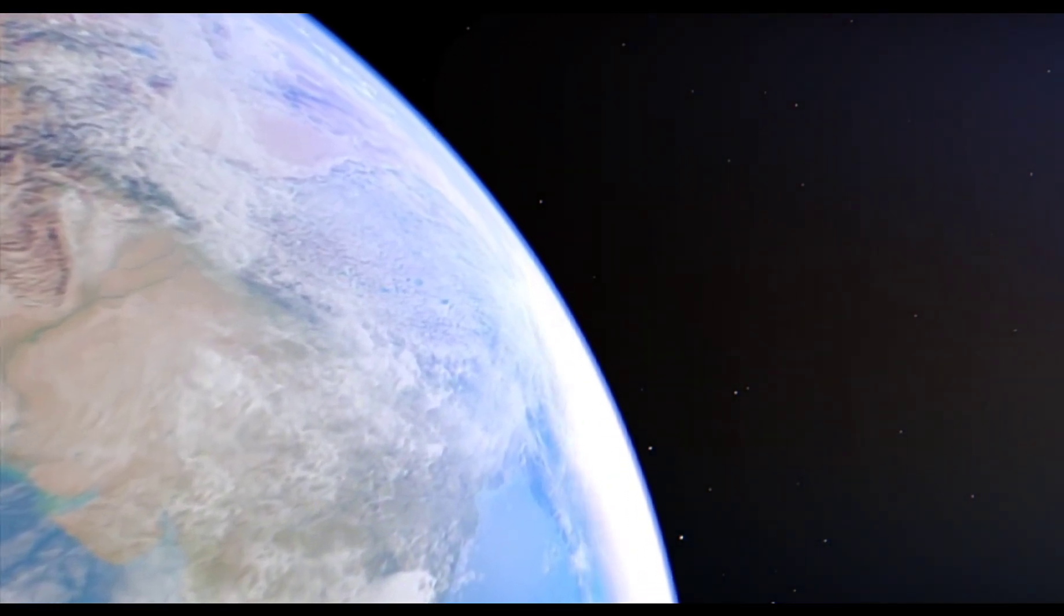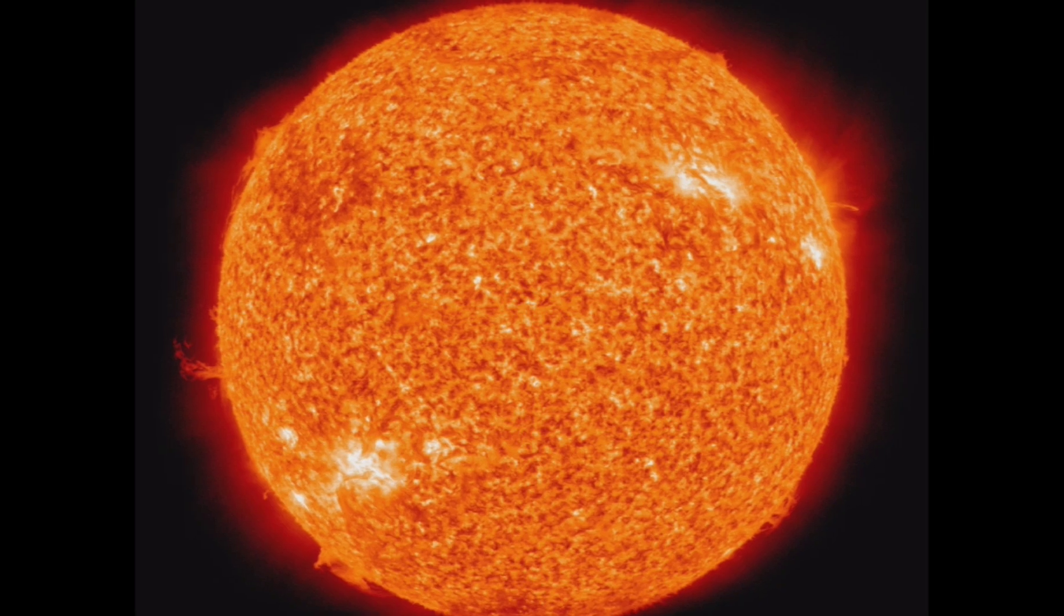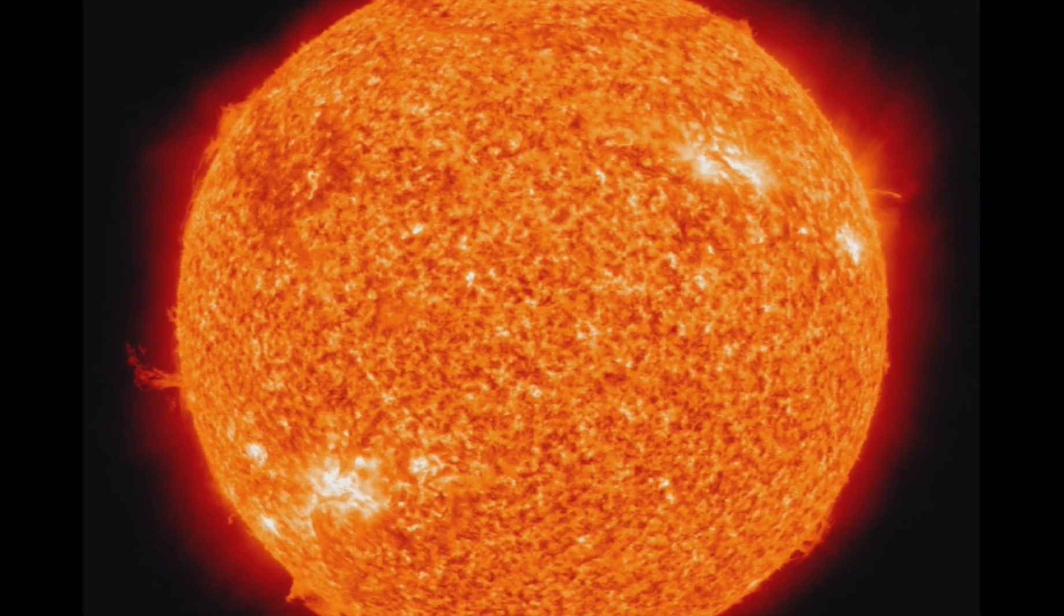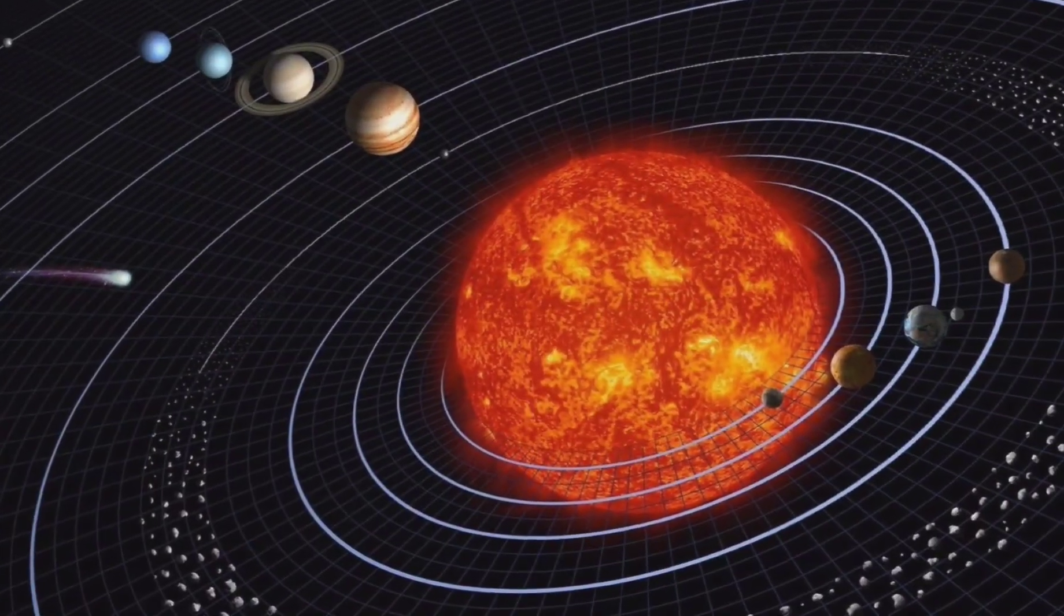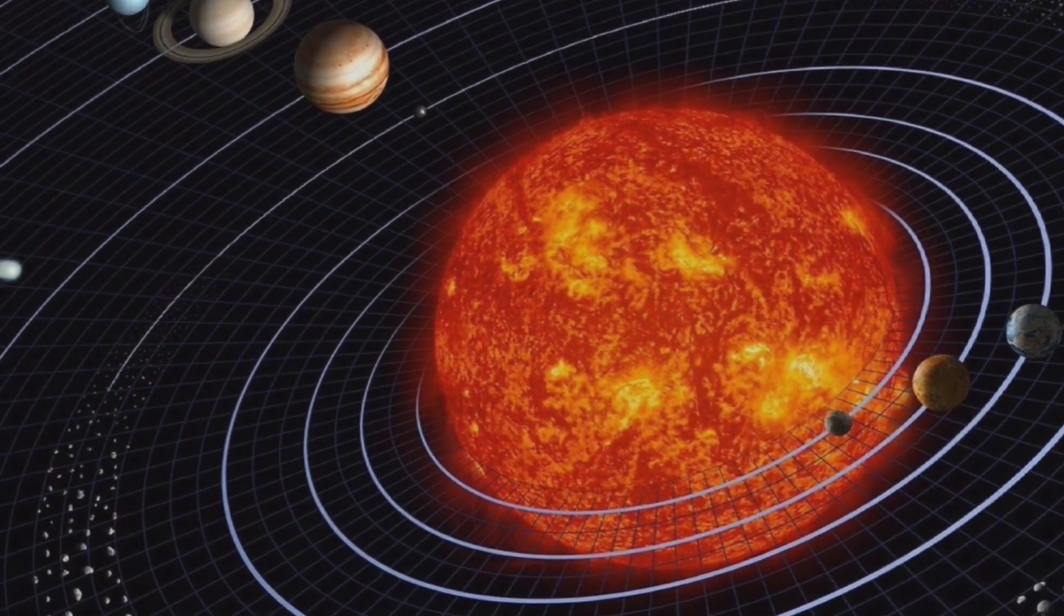It is used as a standard measurement for distances within our solar system. It takes about 8 minutes and 20 seconds for light to travel from the Sun to Earth, so we perceive the Sun as it was approximately 8 minutes ago. See you in the next video! Bye!